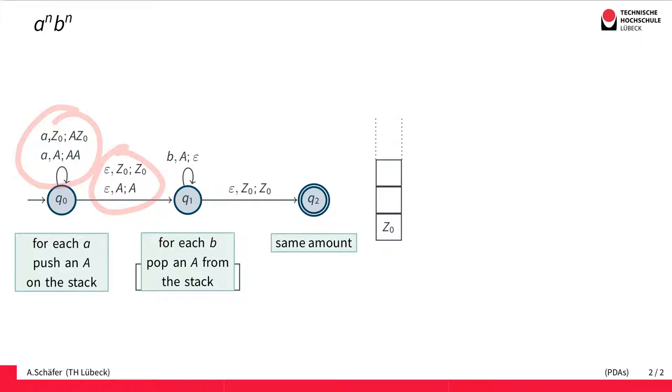If we see this marker again, we know the stack is empty. Then we change state and go to the accepting state. Thereby, we've established that the amount of A's equals the amount of B's, just using the stack as memory.